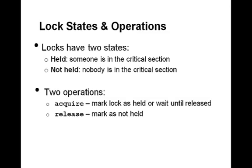The first is the acquire operation. When a thread calls acquire, it marks the lock as held if no one is currently holding it and allows the thread to proceed by returning immediately. If a thread has already called acquire, then the acquire operation does not return but instead waits until that first thread subsequently calls release. Release marks the lock as not held and lets one other thread that is currently calling acquire proceed.